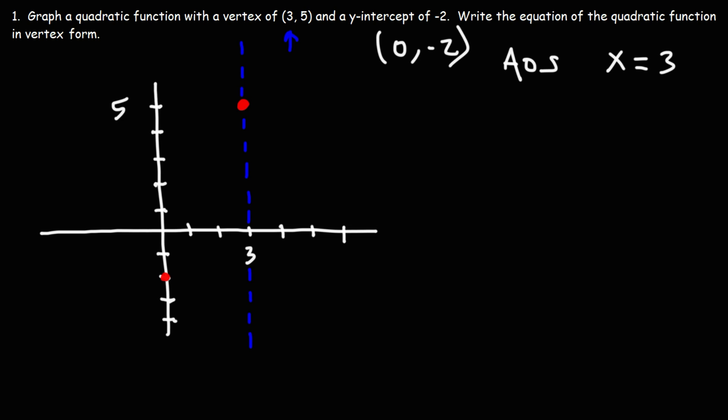So this line basically splits the parabola into two equal parts. The left side is going to be the same as the right side. Notice that the y-intercept is exactly three points away from the axis of symmetry. So we can get an equivalent point three points away from it as well. If we travel three units to the right, starting from the axis of symmetry, it's going to take us to this point here, which is at (6, -2).